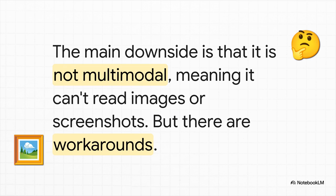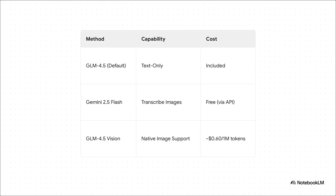We've got to be real about the tool's biggest weakness. The base GLM 4.5 model is not multimodal — it can't look at a screenshot of a bug or a design you want it to build. It's a bummer, but don't worry, there are some really great workarounds. You can use the Gemini Flash API, which is free, to basically turn an image into text that GLM can understand. Or, for about 60 cents per million tokens, you can use the GLM 4.5 Vision model, which has native image support built in. The point is, you have cheap, flexible ways to solve this problem.